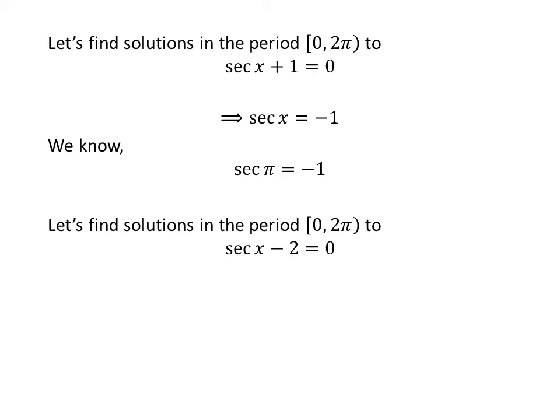Now let us find the solutions to the equation secant of x minus 2 is equal to 0 in the period 0 to 2π. Taking minus 2 from the left hand side to the right hand side gives us secant of x is equal to 2. We know the value of secant of π/3 is 2.